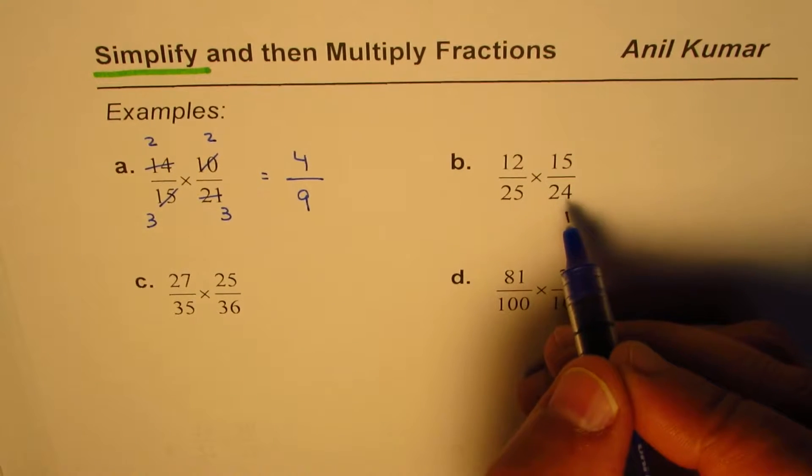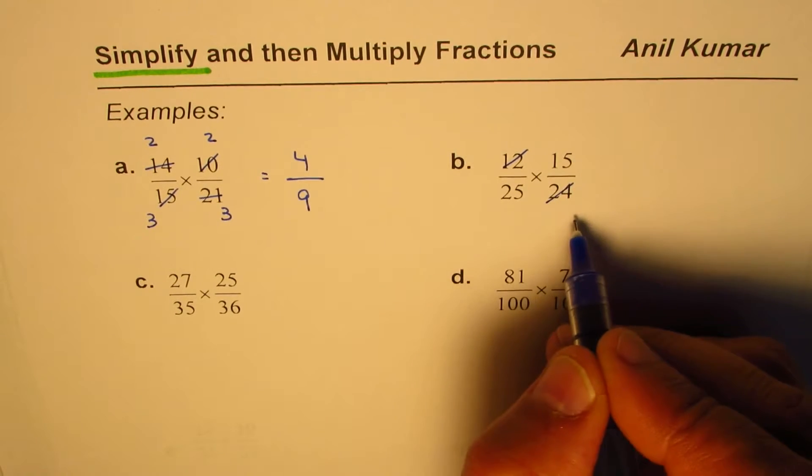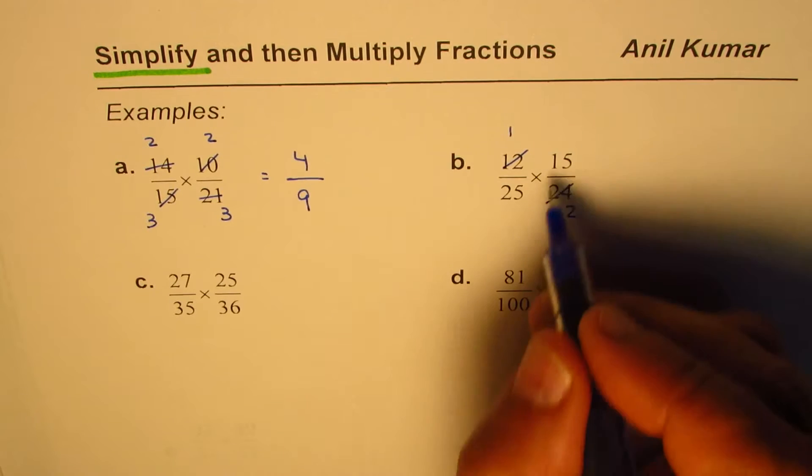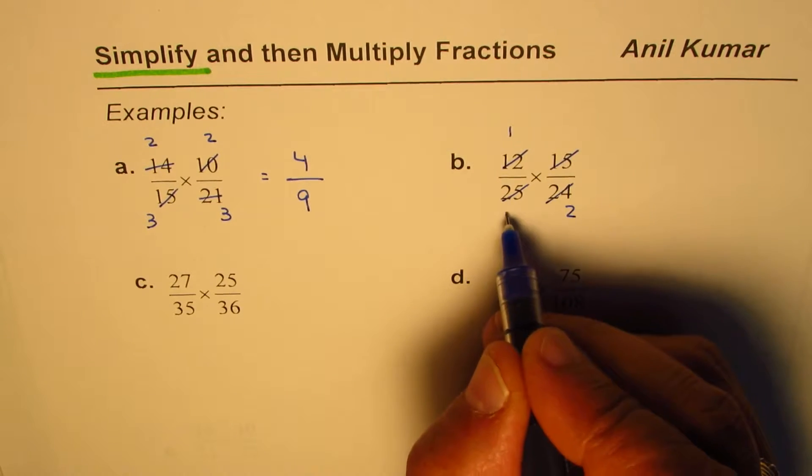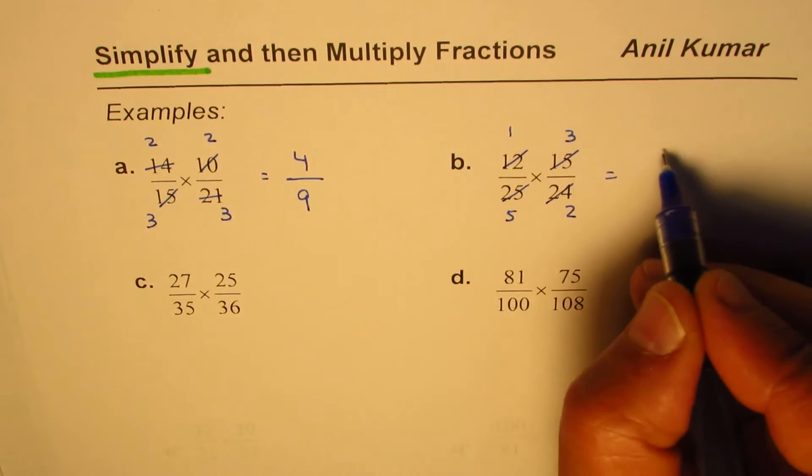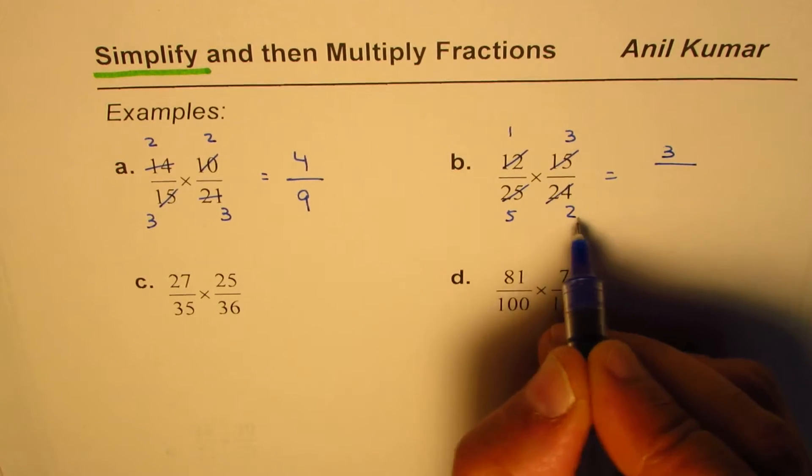Let's do one more. 12 over 25 times 15 over 24. You could divide them by 12: 2 times 12 is 24. 15 and 25: 5 times 5 and 5 times 3. And now when you multiply numerators you get 3, denominators you get 10. So that is your answer.